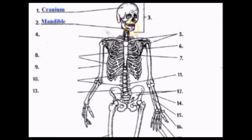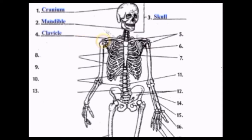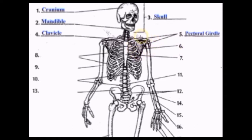Next is the Mandible, which is the jaw. Together, the mandible and the cranium make up the skull. Then we have the Clavicle, which is your collar bone. The Pectoral Girdle is composed of the entire shoulder area.